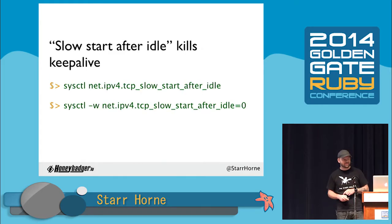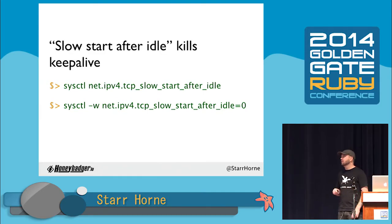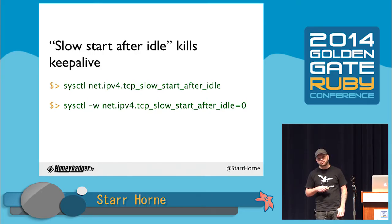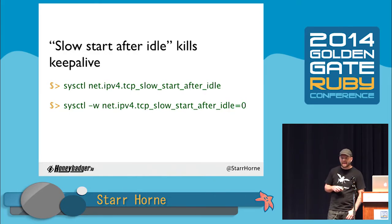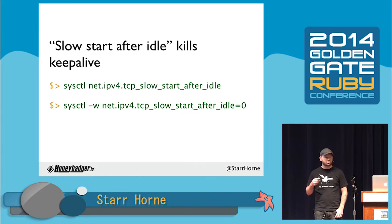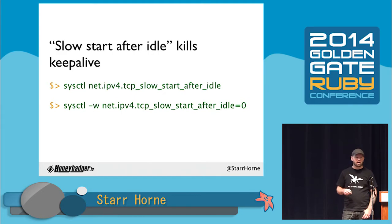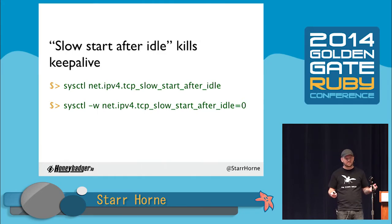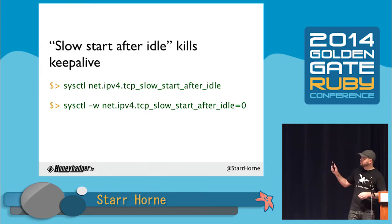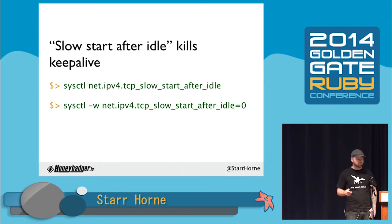Here's one concrete suggestion: most network stacks have a feature called slow start after idle. Your network stack monitors open TCP connections, and if they haven't been used in the past half second to one second, it requires the next request over that connection to go through the whole slow start process again — which defeats the whole purpose of keep-alive. The first command checks if you have this enabled, and the second disables it.